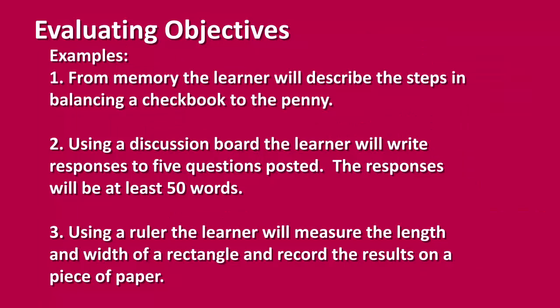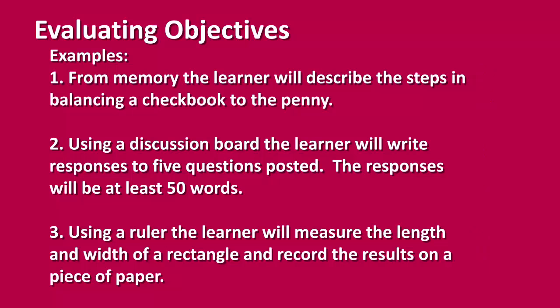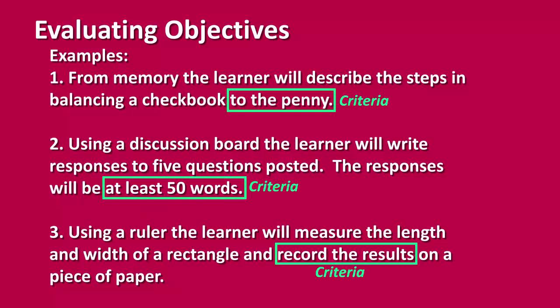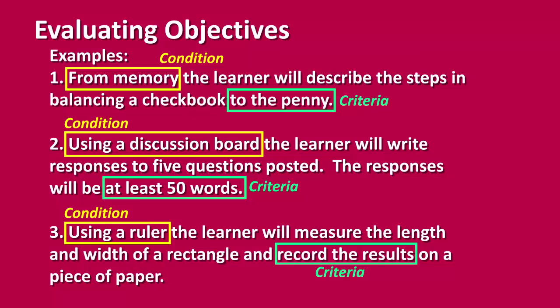After writing the performance objectives, you are going to want to evaluate them. One simple way is to try and write a test item for the objective — if it is difficult to write a test item, then go back and rewrite the objective. Look at the criteria and determine if it will be observable with the specified condition; this may be easy with verbal and intellectual skills, but not as easy with psychomotor or attitude skills. Check the objective for clarity and feasibility, and don't be afraid to use two to three sentences to write the objective clearly. One additional note: make sure the objective doesn't specify how a behavior is learned — the how is not part of the performance objective. The performance objective is what students will be able to do when they complete the instruction.